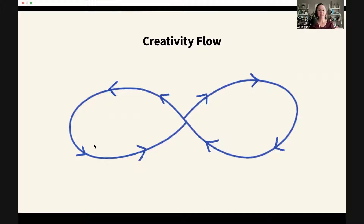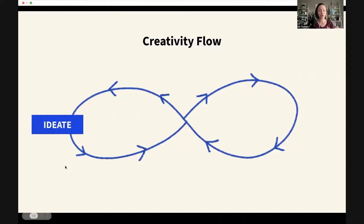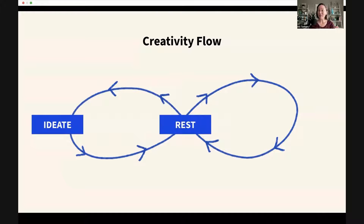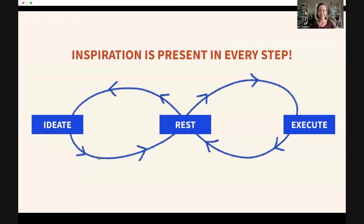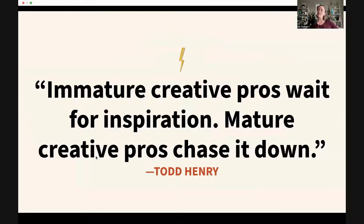In this act, I like to think about it as a flow — different acts you do that repeat in a harmonious way. First, you're going to ideate: be positive and open to ideas, gather inspiration. Then you're going to rest — and this can include actually resting, getting feedback, collaborating with others, and bouncing ideas off people. Then on the other end, execute. At some point you have to push your idea forward to see if it's going to work, then loop back and ideate some more. Inspiration is present in every single one of these steps. As Todd Henry says, 'Immature creative pros wait for inspiration; mature creative pros chase it down.'